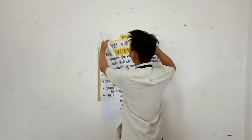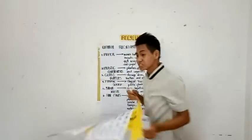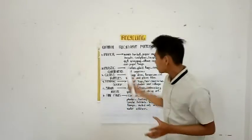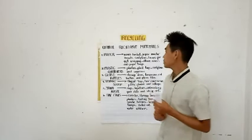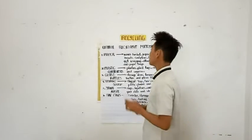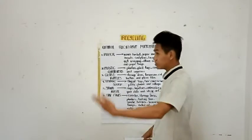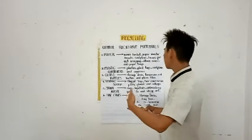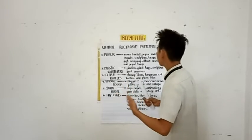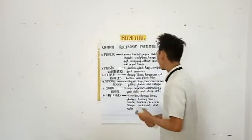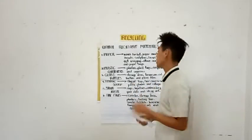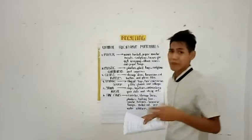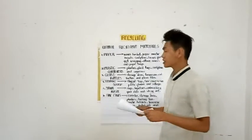What are the common recyclable materials that we always use or encounter? These are the following: First, paper — it could be used as paper woven baskets, paper cake, paper beads, paper sculpture, bags for gift wrapping, album covers, and paper bags. Second, plastic containers — these could be used as planters, plant tags, sculpture, and organizers.